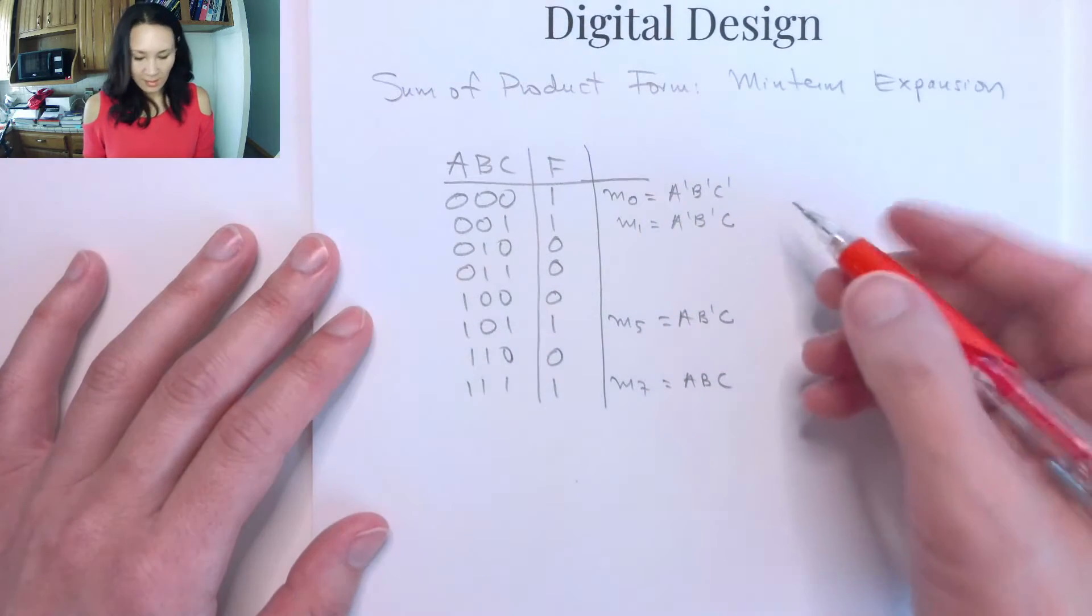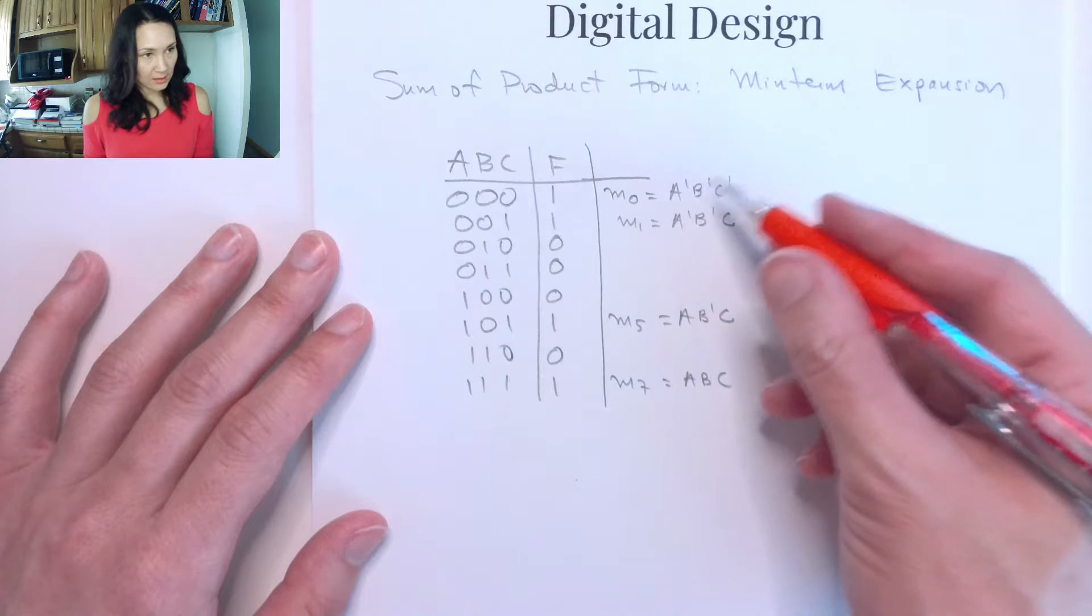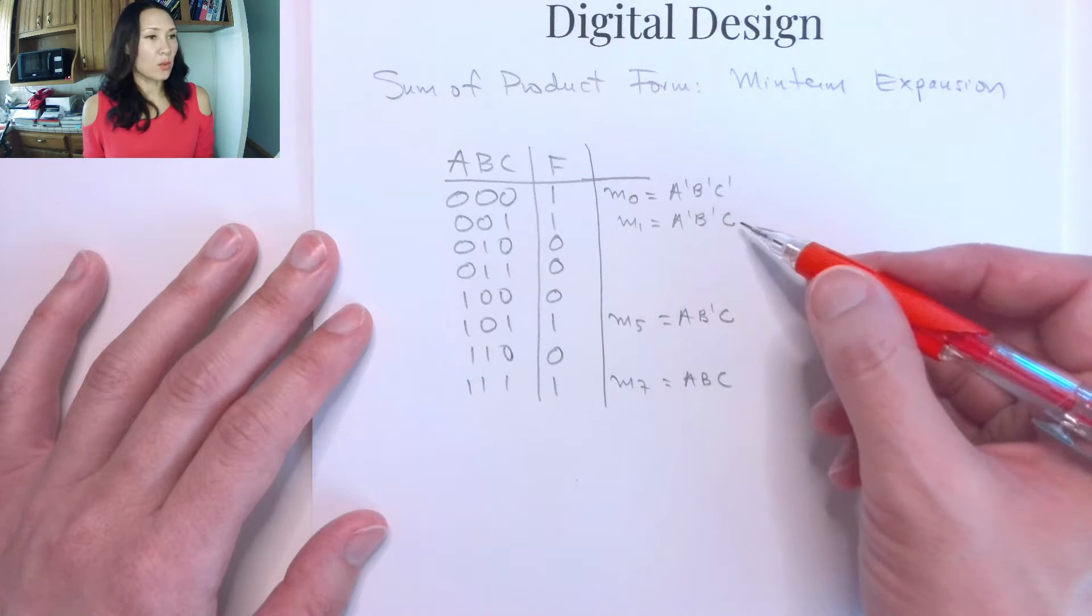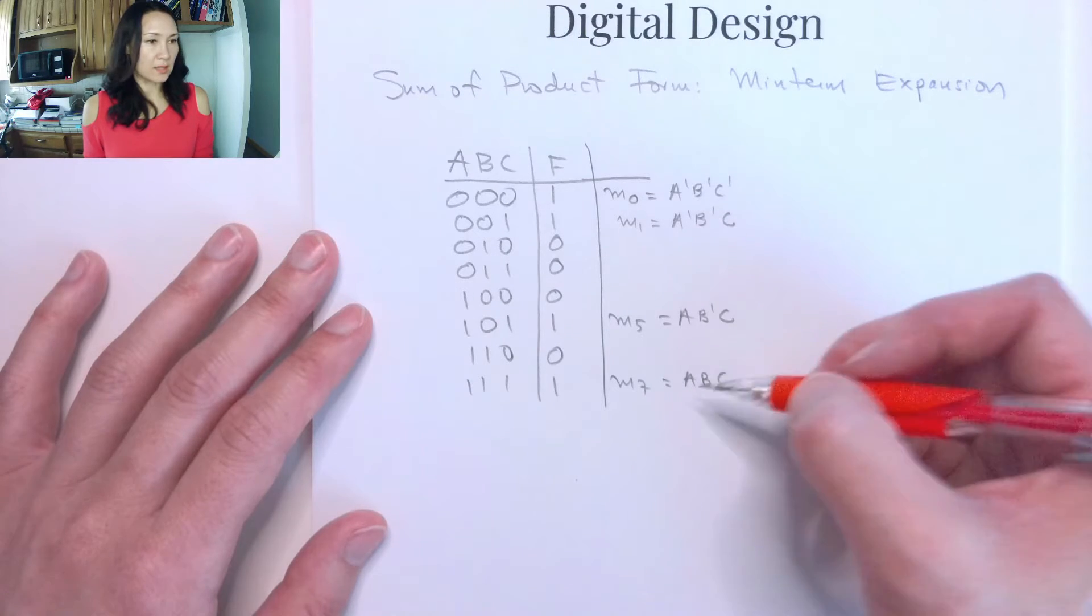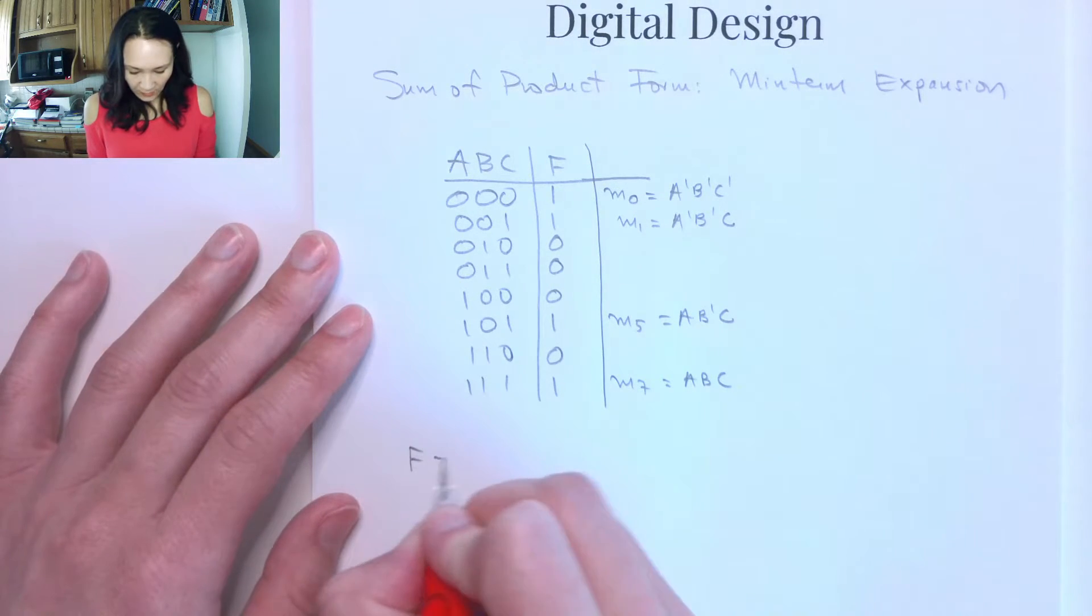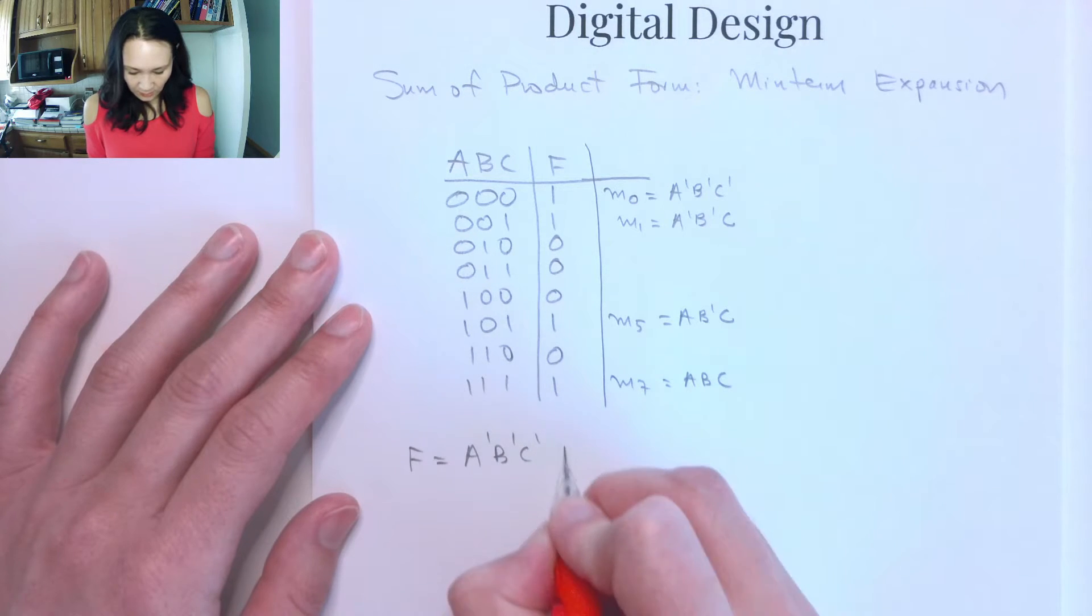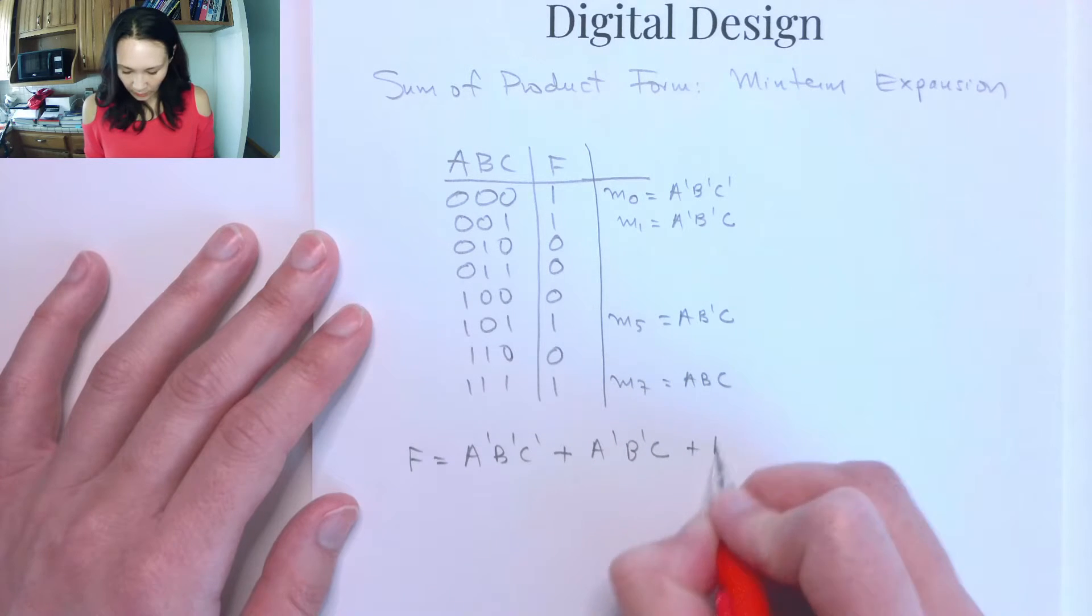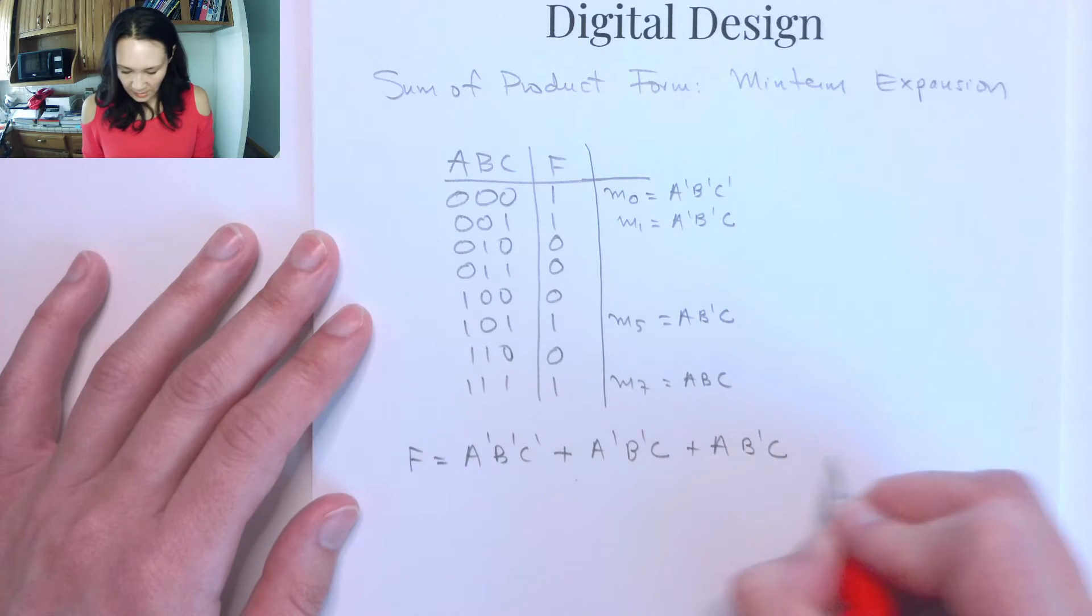So we found that these are all ANDed together, and if any of these are true, then we get a true on our output. That means we can OR each one of these cases together. So our function is A'B'C' OR A'B'C OR AB'C OR ABC.